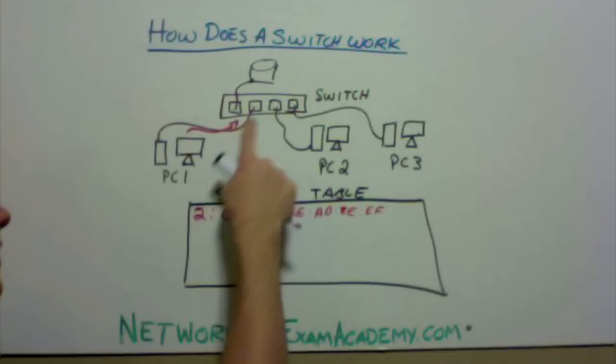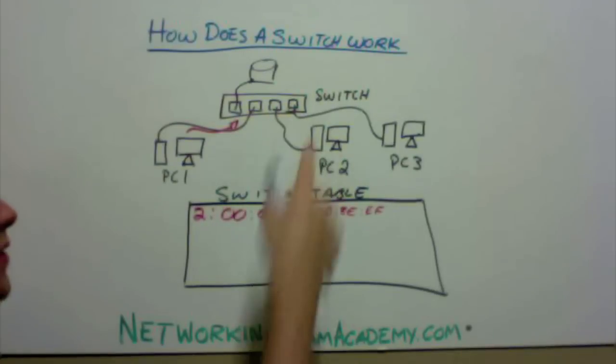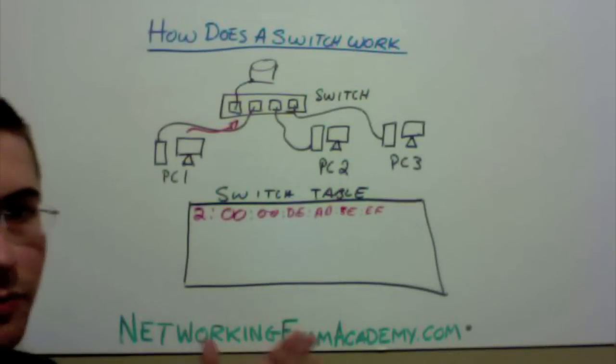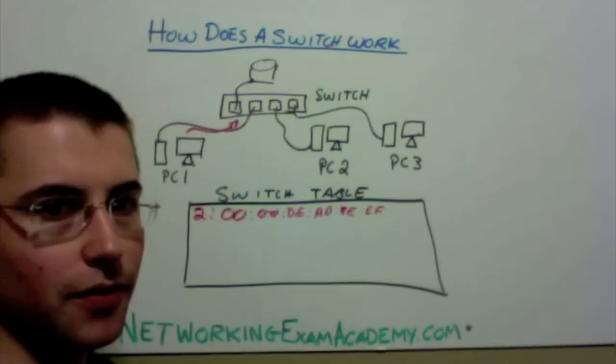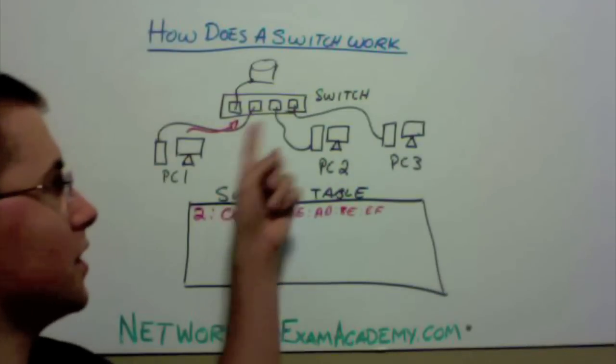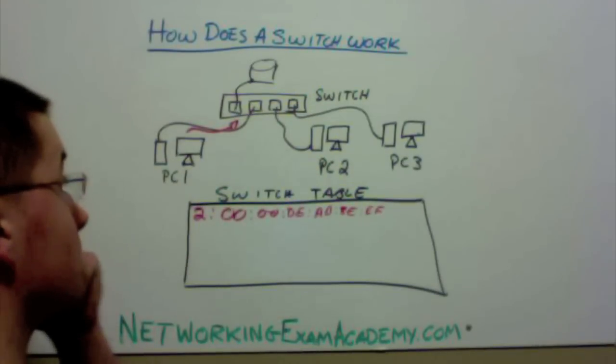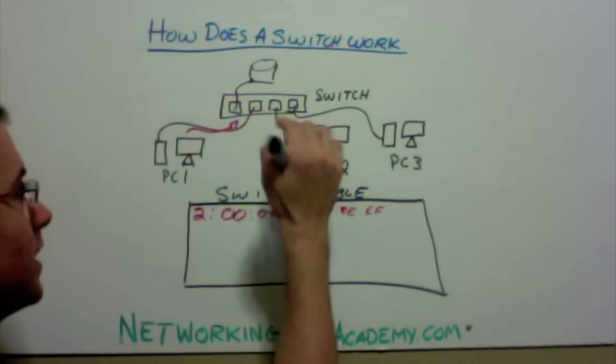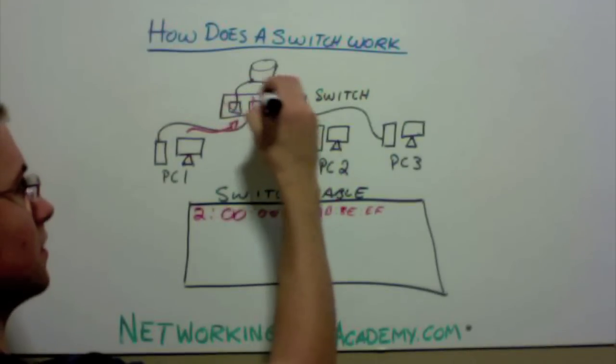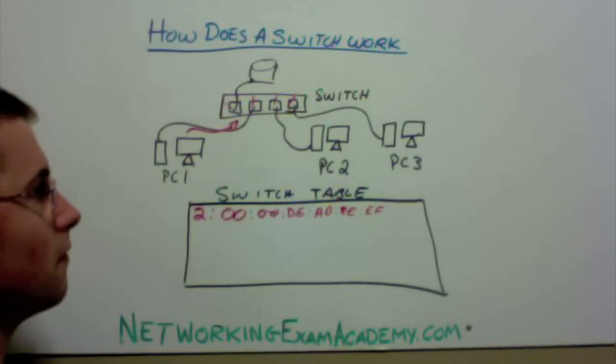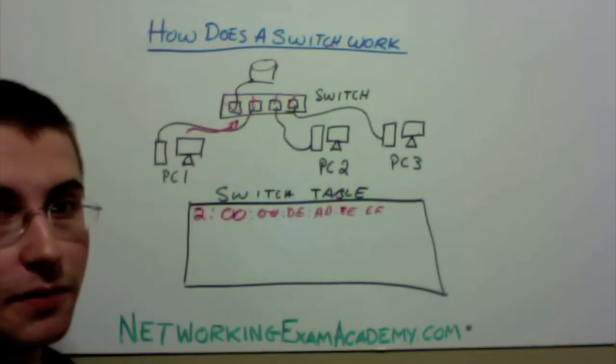And it sent a destination MAC address to PC2. However, the switch has no idea what computers are actually plugged into which port. So, it's going to broadcast the destination MAC address at every single port and hope that someone responds.